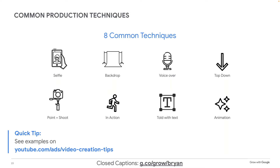Seventh: told with text. You add text to a video to highlight what the narrator is saying, emphasizing certain words and driving home certain points. It can also be used for videos with no narration at all. We actually create a lot of videos for clients where we take their blog posts and turn them into told-with-text videos with stock background music, video footage or photos, and text on top. The eighth technique is animation and motion graphics — especially useful if you're promoting a service or digital product. You use illustrations or motion graphics to showcase your product's benefits, which works especially well for services and digital products like software where you may not have a physical product to show.